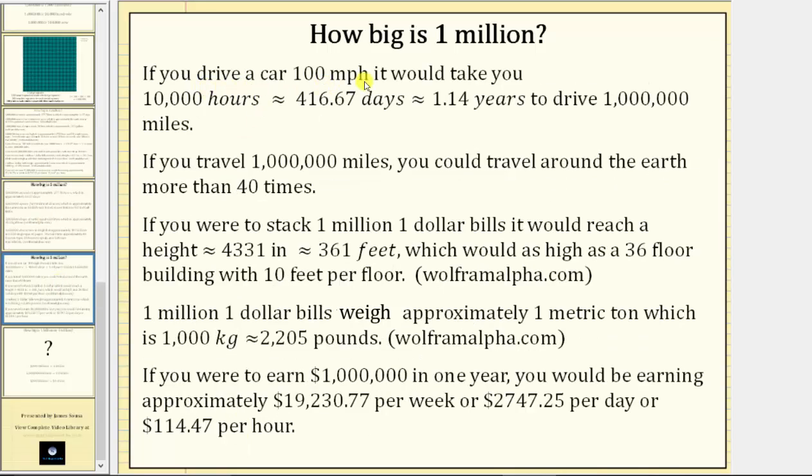If you drive a car 100 miles per hour, it would take you 10,000 hours, or approximately 416.67 days, or approximately 1.14 years to drive one million miles. If you travel one million miles, you could travel around the earth more than 40 times.